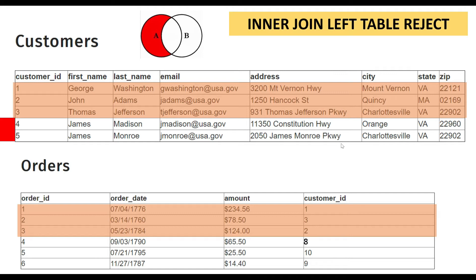We have another one which we'll discuss in the next video, and that's going to be inner join right table reject. After applying the join, we look at the right table and the rejected records will be the last three records, which are order ID four, five, and six.